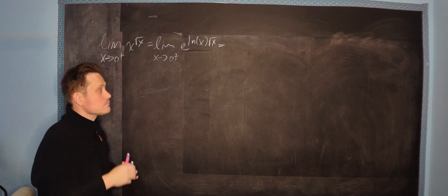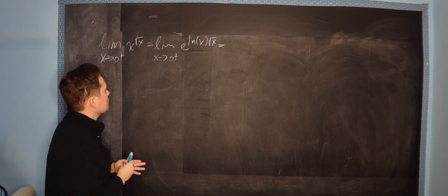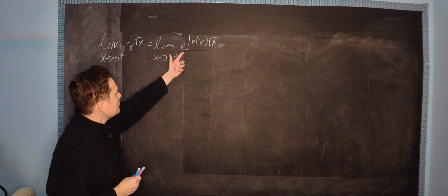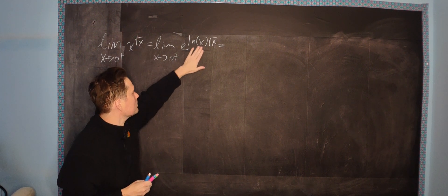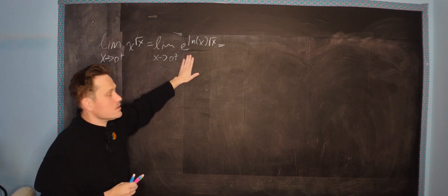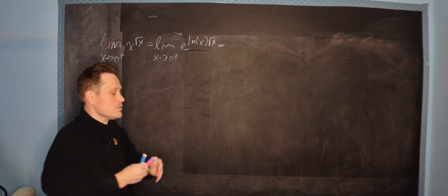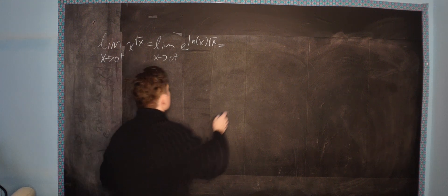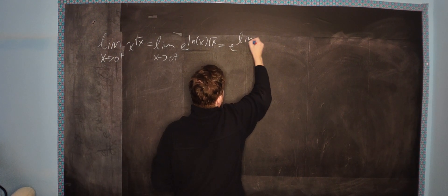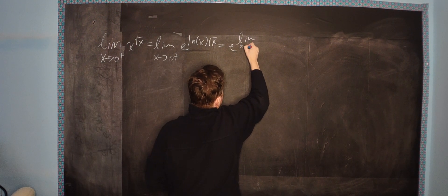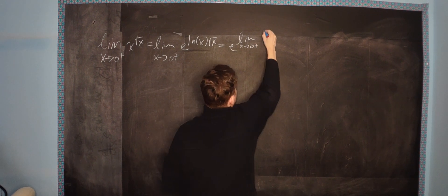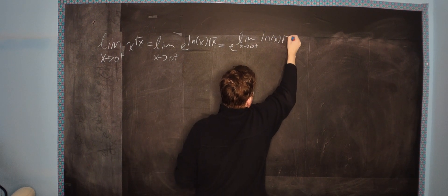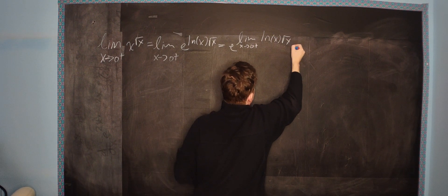Now, another thing: this e function has a limit inside. You can just slip the limit into the exponent because e to the whatever is continuous. So you end up with e to the limit as x approaches 0 from the right side of ln of x multiplied by the root of x.